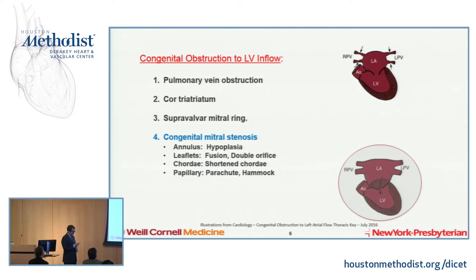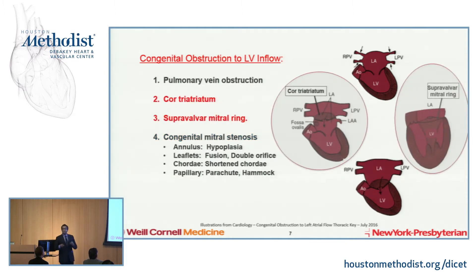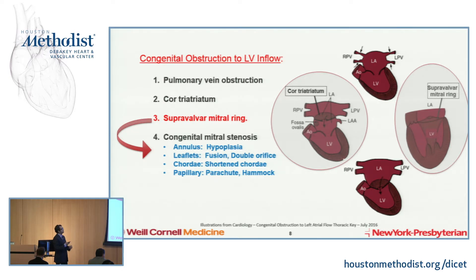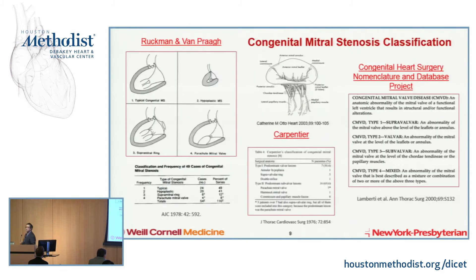All these can lead to congenital mitral stenosis. For this talk, I've been charged with speaking about two particular types of obstructions: cor triatriatum and supravalvular mitral ring. With cor triatriatum, you have a membrane or obstruction in the left atrium that can function like mitral stenosis. With supravalvular mitral ring, it's a similar thing, but it's often linked with other mitral valve abnormalities, including abnormalities of the chordae and the mitral valve apparatus.